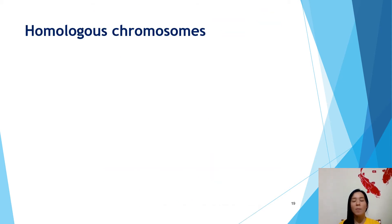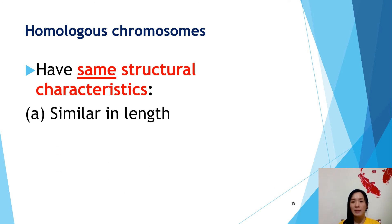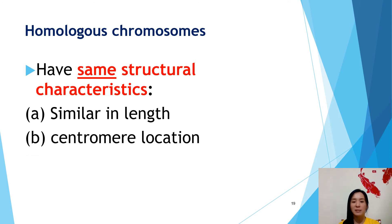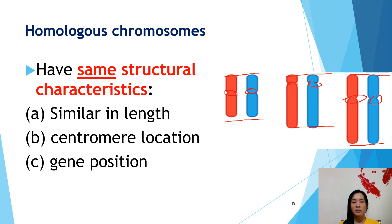Why do we call it homologous chromosomes? Homologous chromosomes have the same structural characteristics — they are similar in length, the centromere location is the same, and the gene positions are the same. You can see here there are three sets of homologous chromosomes with the same length and the same centromere position.